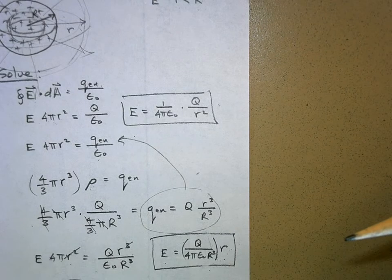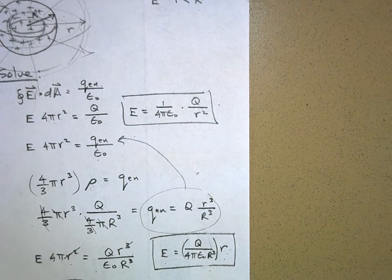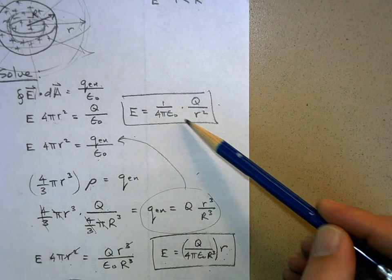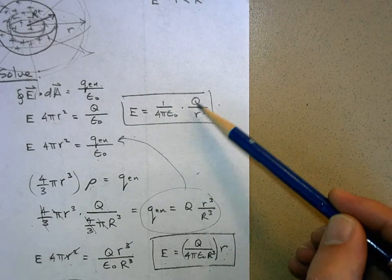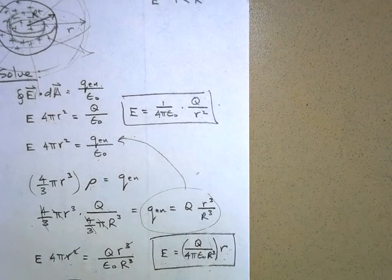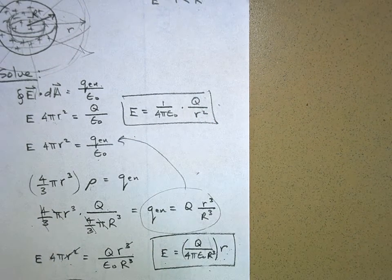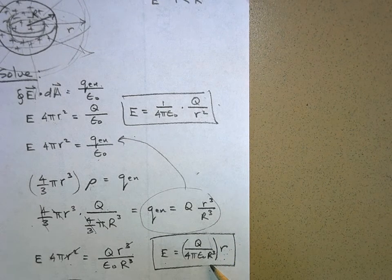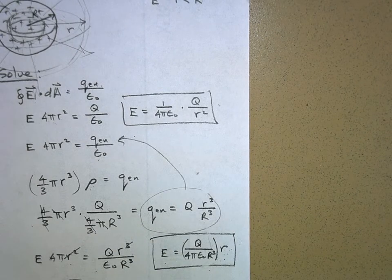When you're right at the surface, which equation applies? Both should give the same answer. If you set r equal to R in the inside equation, you get (1 over 4π epsilon naught) · Q/R² — the same as the outside equation. We have continuity.